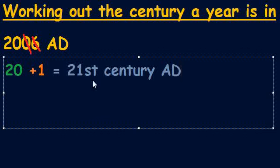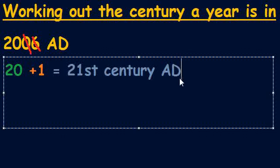The reason I've written 'ST' here is just like when we write a date — for example, the 21st of October we would write '21ST'. We do the same thing with centuries. I've written AD because at the end of the year we've been told it's AD — 2006 AD. So from this I know that 2006 AD is in the 21st century AD.